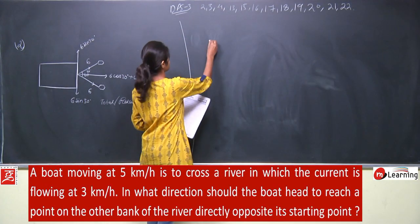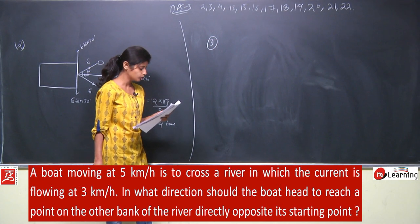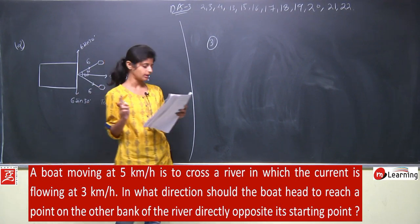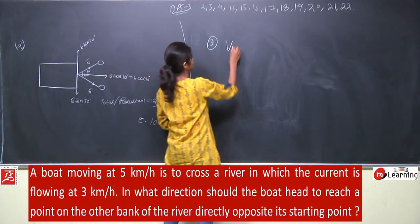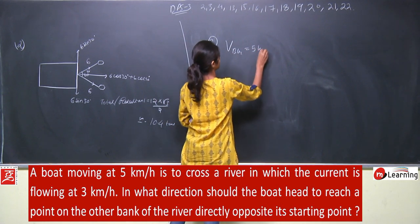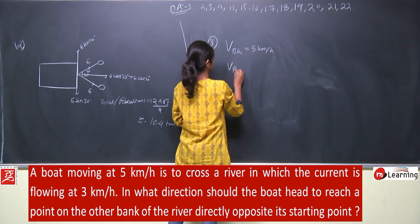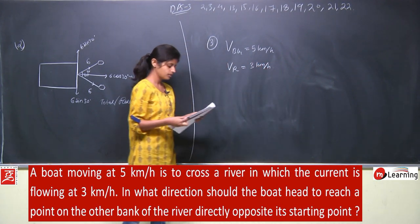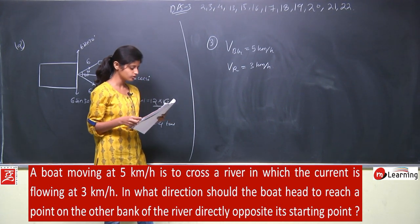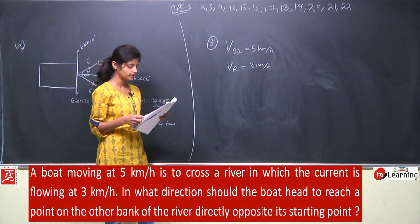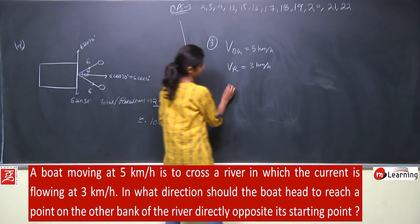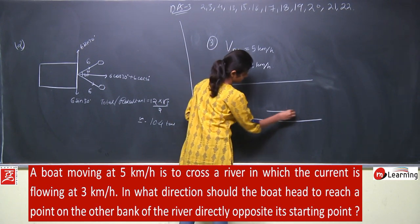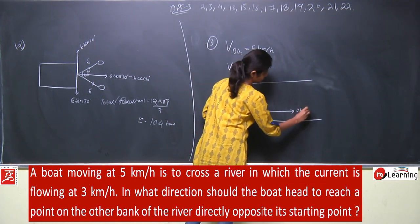Next is question number 3. A boat moving at 5 kilometer per hour is to cross a river in which the current is flowing at 3 kilometer per hour. So velocity of boat with respect to ground is 5 km/h and velocity of river current is 3 km/h.